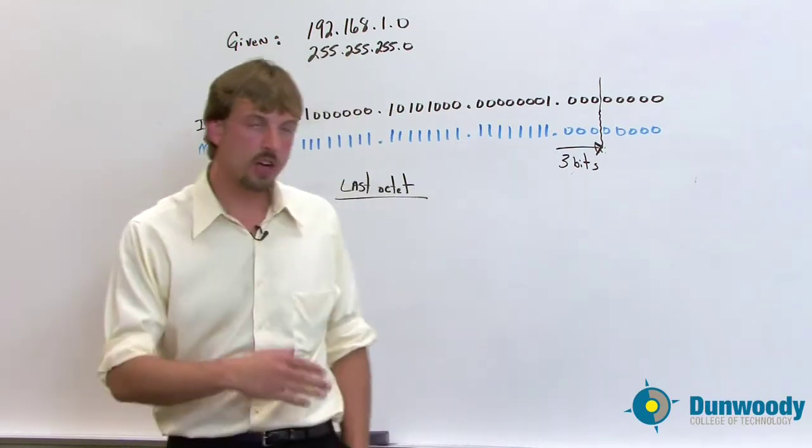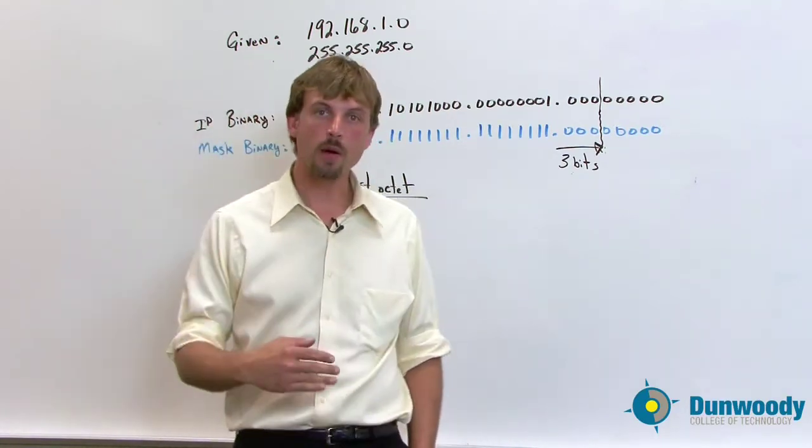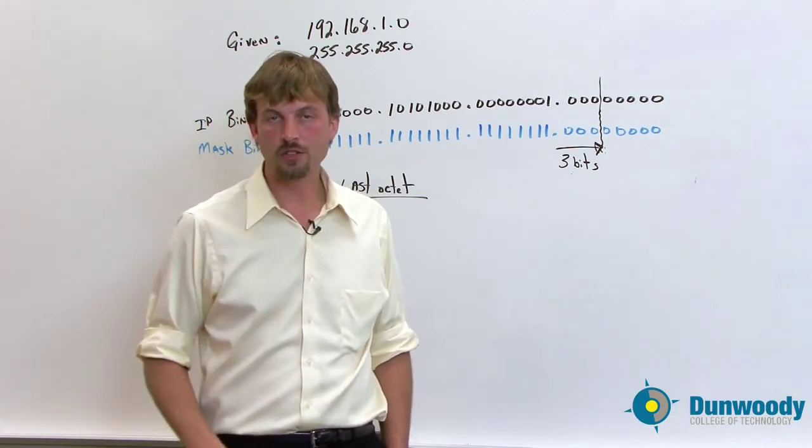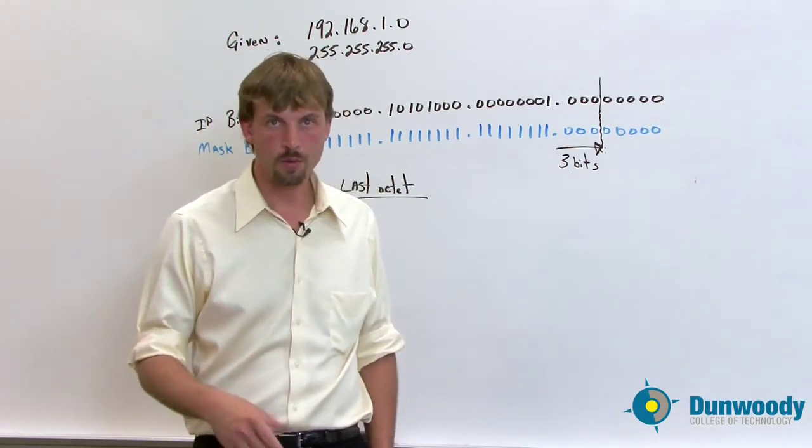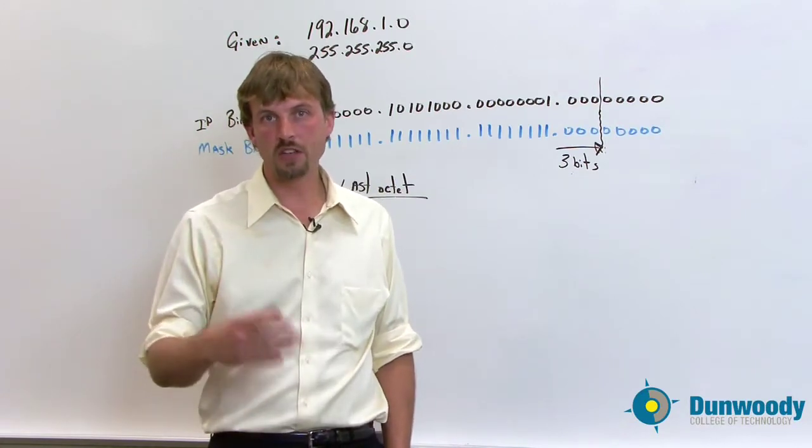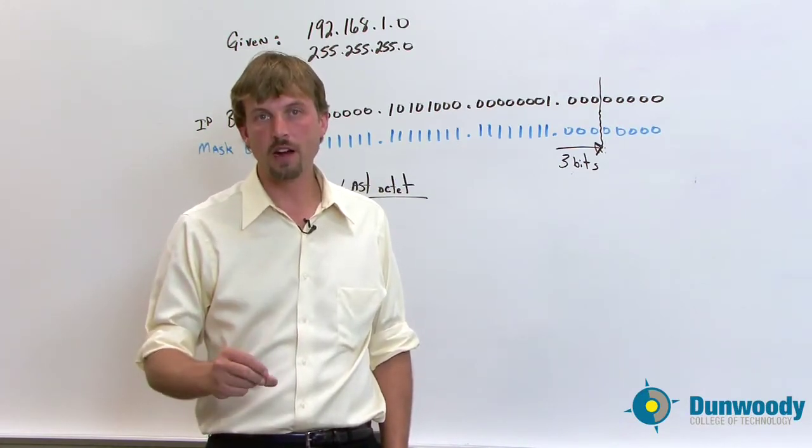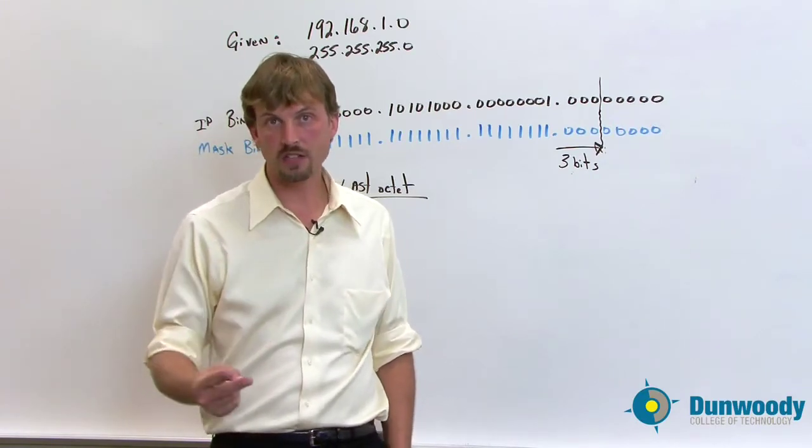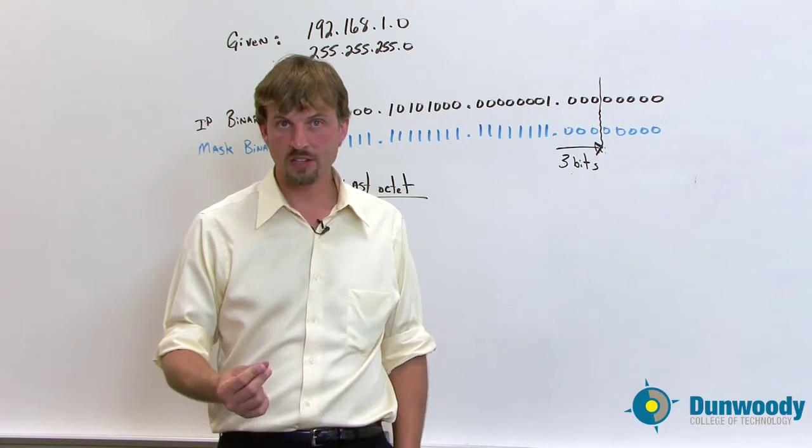So in the first part, we talked about the IP basics, and in the second part, I showed you the formula 2N-2 that allows us to figure out how many bits we're going to borrow. Now, towards the end of that segment, we determined that we needed three bits, and we also got to the second step of the subnetting where you determine the new mask.